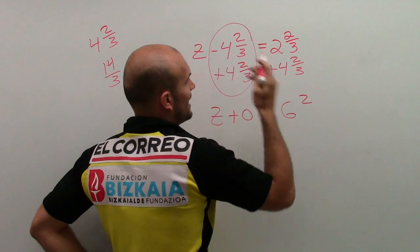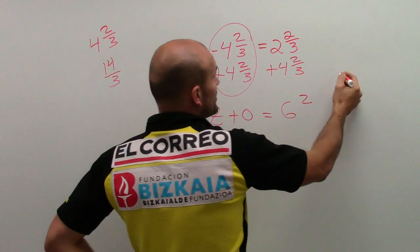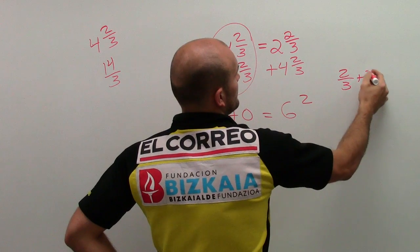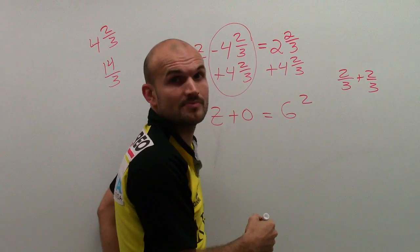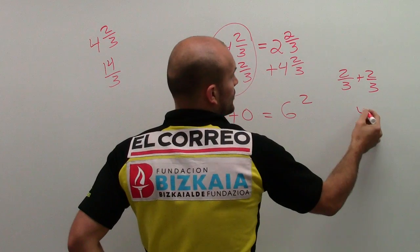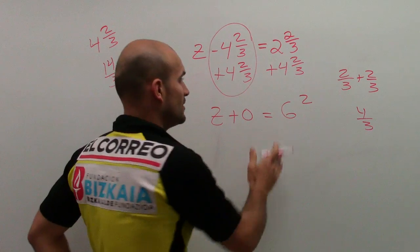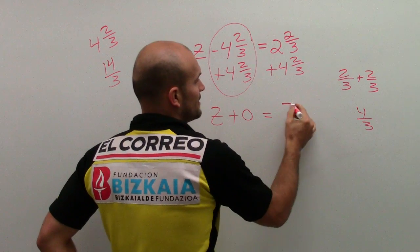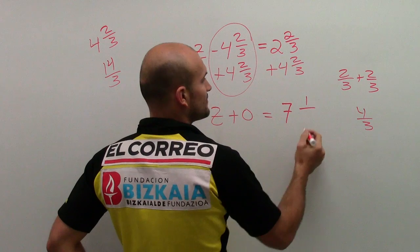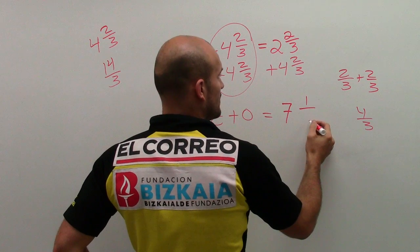So I have 6, and then 2 thirds plus 2 thirds is going to equal 4 thirds, which is actually another one. So now I'm actually going to have 7 and 1 third.